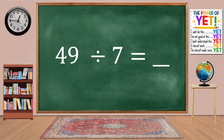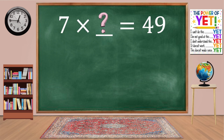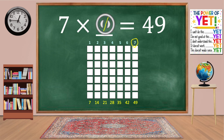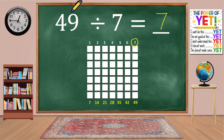49 divided by 7 equals blank. Our related fact is 7 times what equals 49? Skip count: 7, 14, 21, 28, 35, 42, 49. We have seven columns. 7 times 7 equals 49. 49 divided by 7 equals 7.